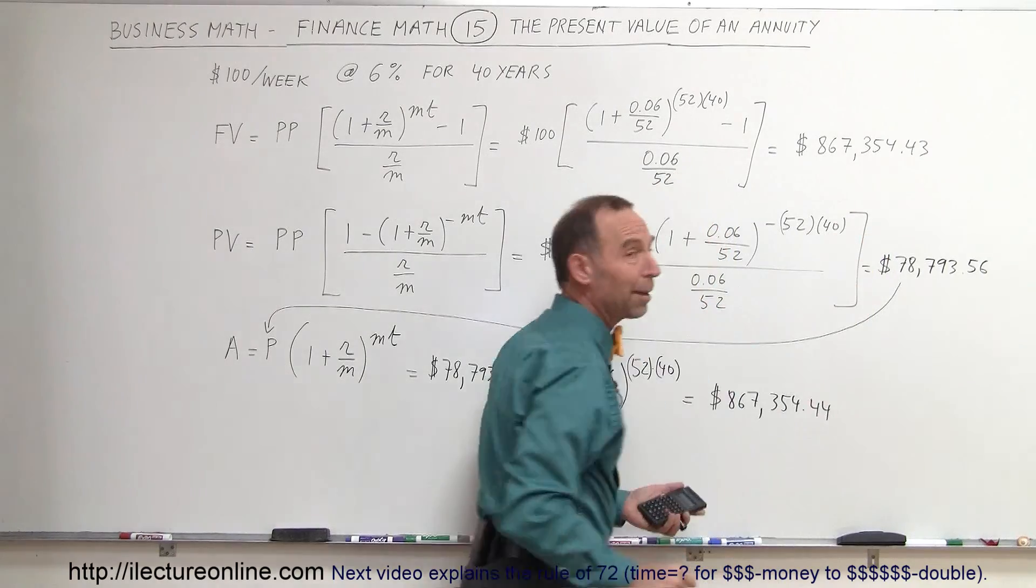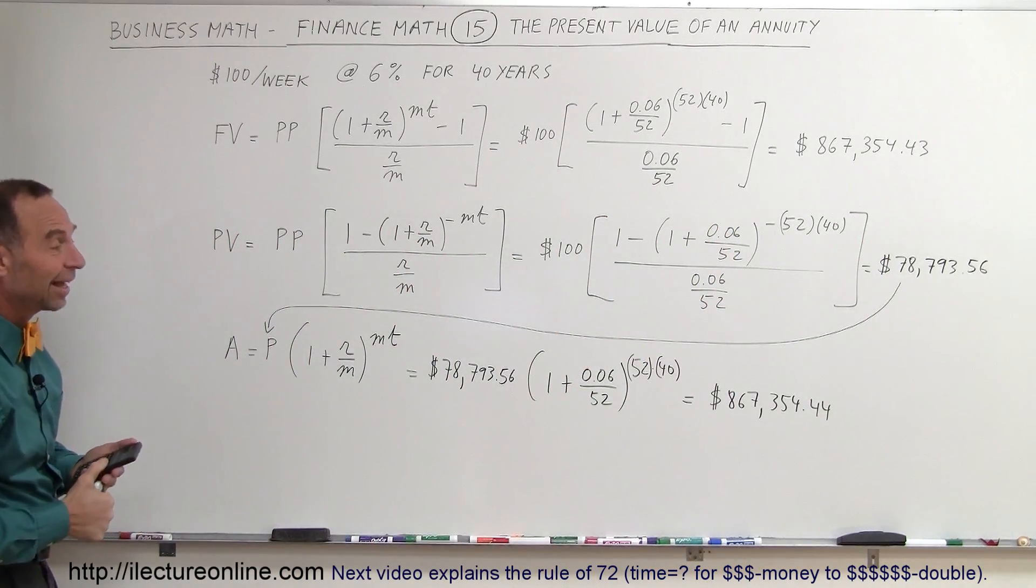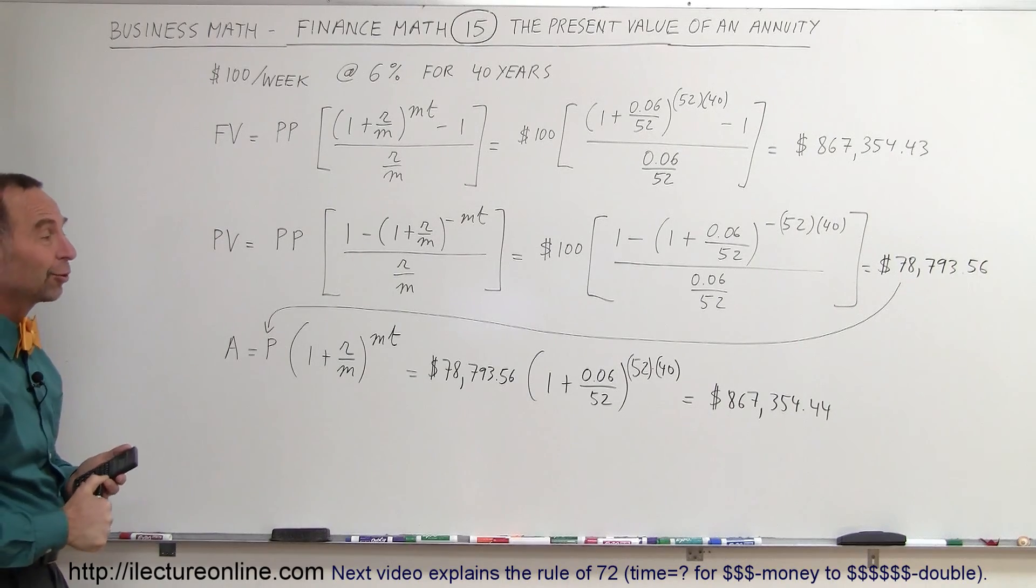And notice we're off by a penny. That's okay, it's probably just a rounding error. So you can see that you get the very same amount after 40 years.